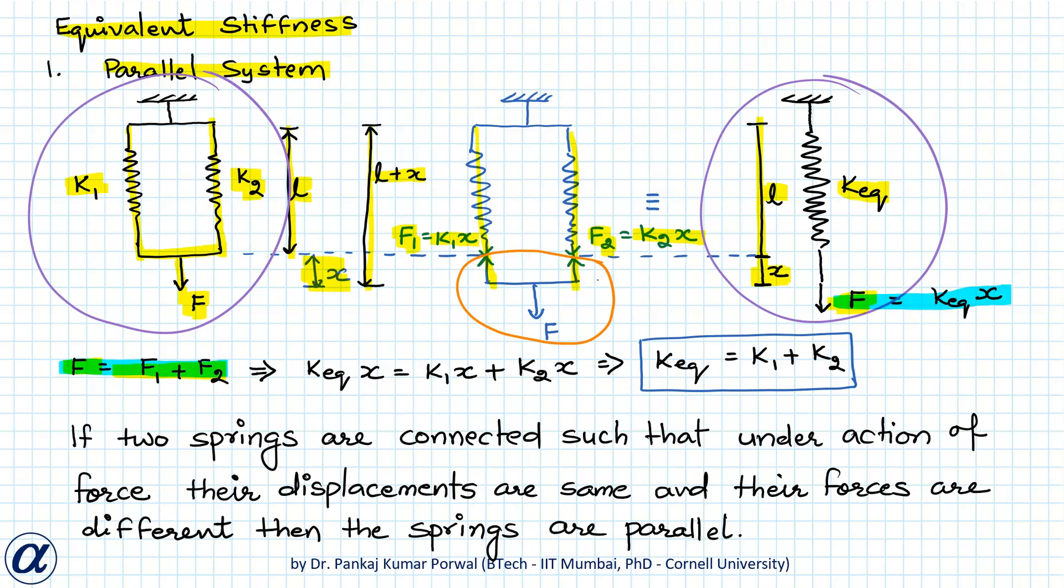So if I substitute values of F, F1 and F2 in terms of the displacement and the stiffnesses then I get k equivalent x equals to k1x plus k2x and that gives me k equivalent equals to k1 plus k2.